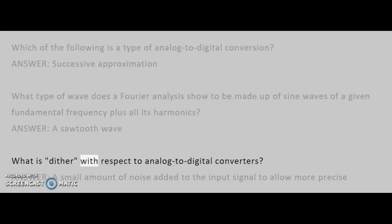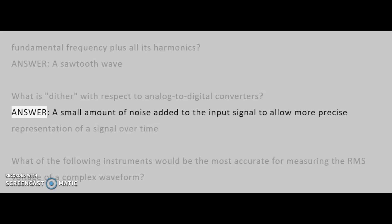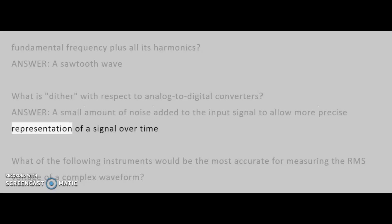What is dither with respect to analog to digital converters? Answer: A small amount of noise added to the input signal to allow more precise representation of a signal over time.